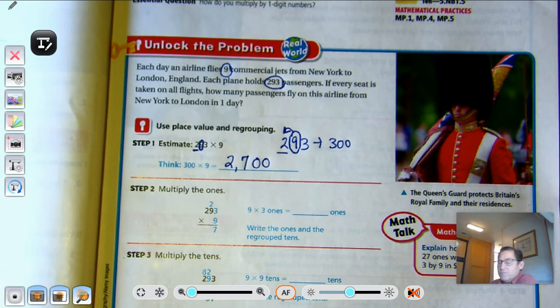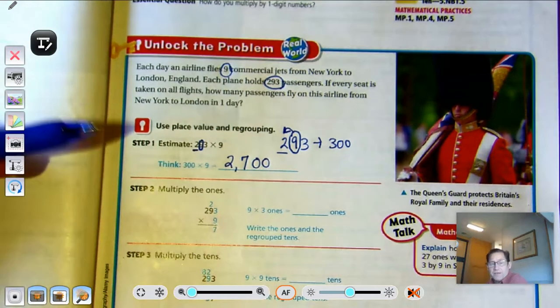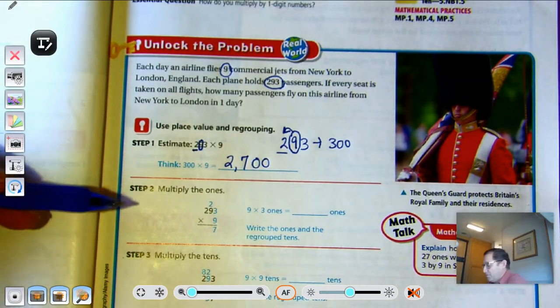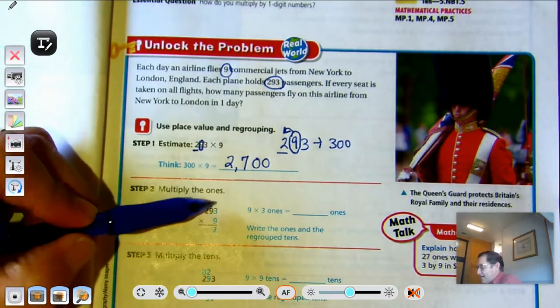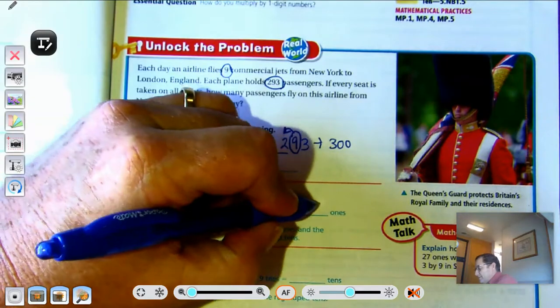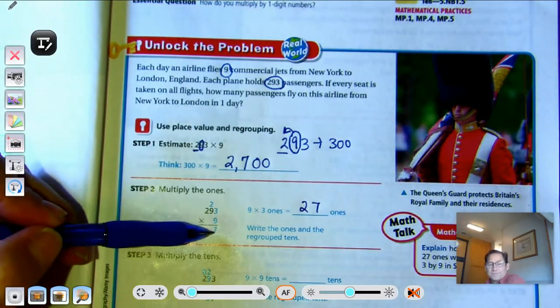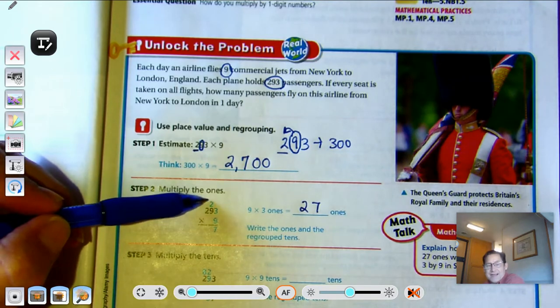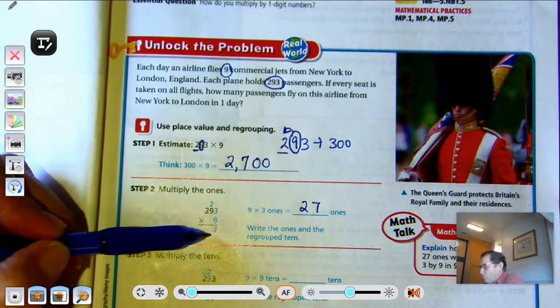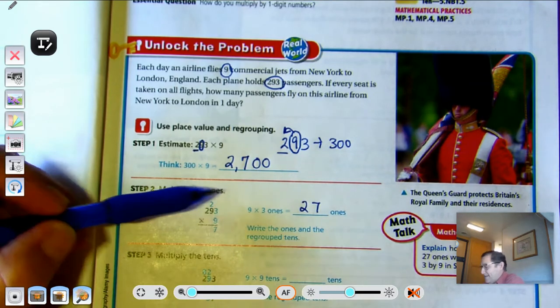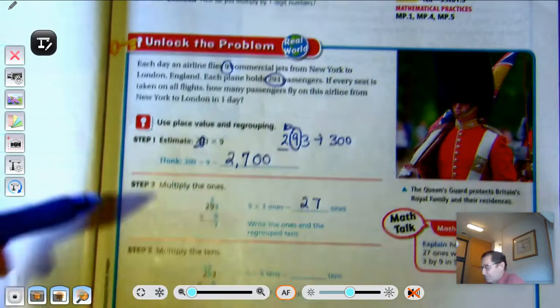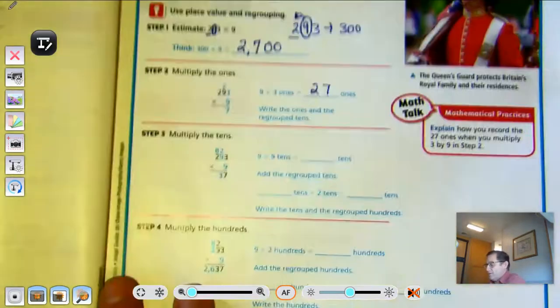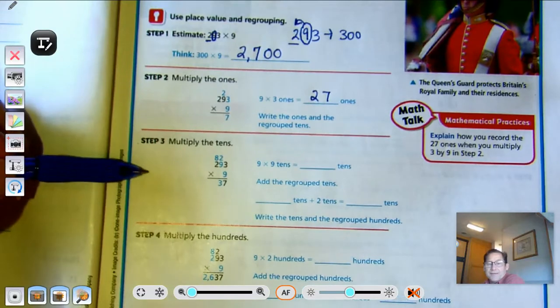All right, so now when we're actually multiplying, you're going to start with multiplying the ones, right? Because we're using place value. And 9 times 3 ones is 27 ones. We're going to write the ones and the regrouped tens. So there's 7 ones and 2 regrouped tens in 27. And we're going to move on to the next step.